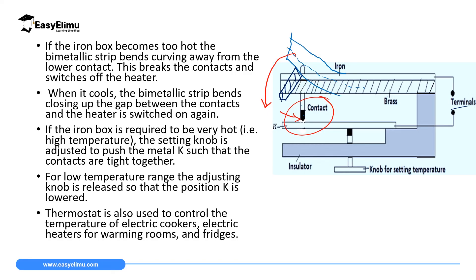This heating and cooling cycle continues until you finish ironing. If you want a higher temperature, you adjust the control knob to increase the required range. Adjusting the knob changes the distance between the contact and the electricity terminal. This thermostat mechanism is also used to control temperatures in electric cookers, electric heaters, warming rooms, and fridges.